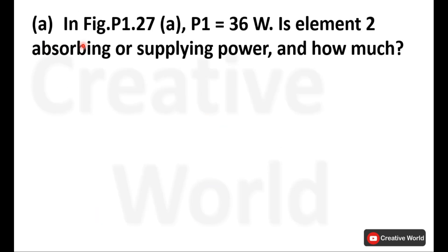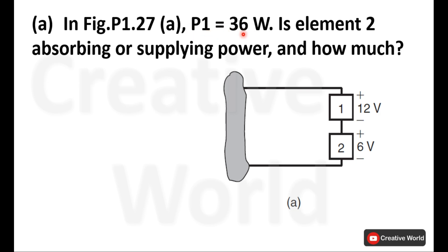Part A: element 1 is absorbing 36 watts because of its positive magnitude. This element is taking 36 watts. In order to calculate the power of element 2, we need voltage and current. In this circuit, current is not indicated, but we have power as well as voltage across this element. So we can use the basic power formula to calculate current through it, and because this is a series circuit, the same current flowing through element 1 will flow through element 2.